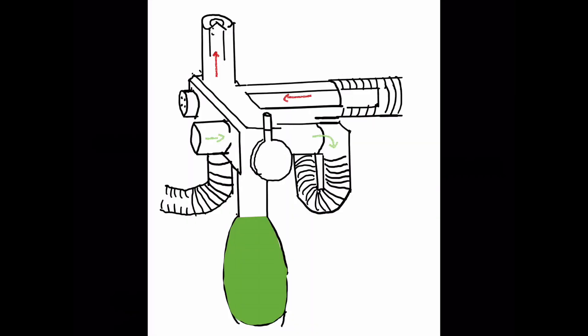On expiration, the expired gas travels through the expiratory tubing. Scavenging can be connected to the expiratory port, which reduces volatile waste to the atmosphere, meaning less exposure to members of staff in the theatre complex and less pollution.